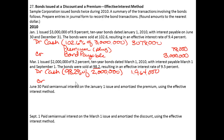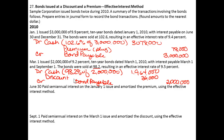We're going to credit bonds payable for the future value, or the face amount of the bond, which is $2 million. And we need another debit to make this balance for $36,000, so it will be called discount on bonds payable, because we sold the bond for less than its face amount.